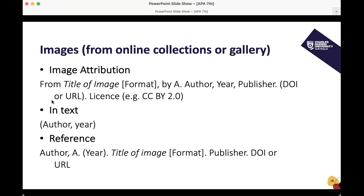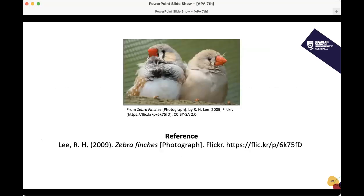If you're going to refer to the image constantly in your text, the in-text citation is simply author and year. In the reference list you include: author, year, title of image, format, publisher, and DOI or URL. Here's an example with two zebra finches — notice the format is listed as 'photograph.' If it were a graph, you write 'graph'; a painting, 'painting,' and so on.